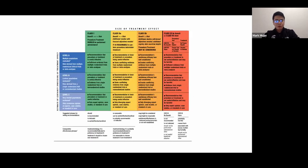Just a quick review of the class of recommendations: Class 1 means a procedure or treatment that should be performed or administered. Class 2A means it's reasonable — benefits outweigh the risk. Class 2B also means benefits outweigh the risk and treatment may be considered. Class 3 means no benefit or no harm.